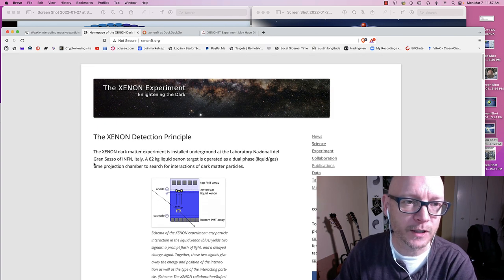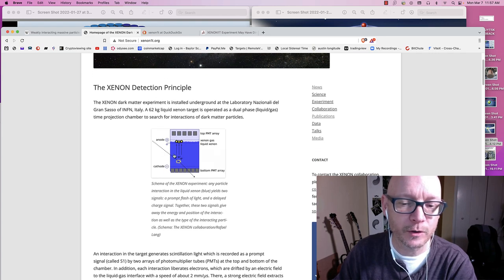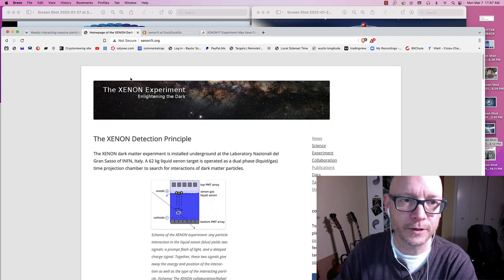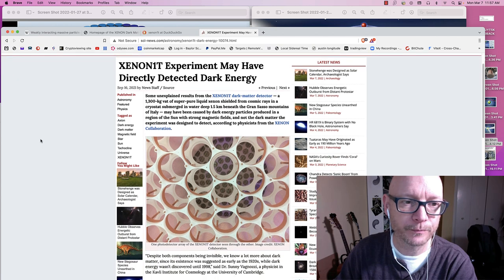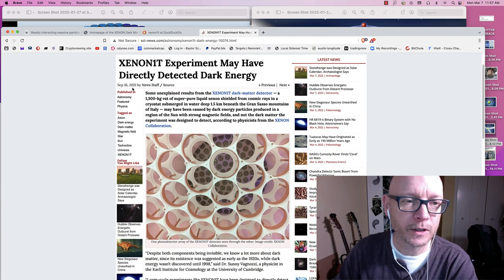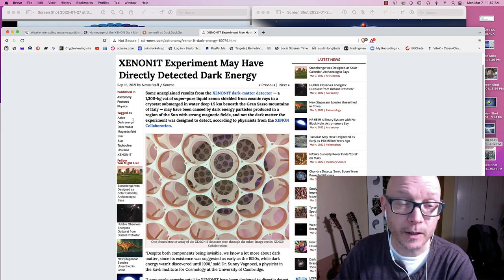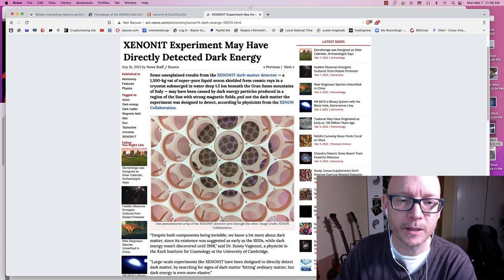Now, did they detect dark matter, or did they detect some other form of weakly interacting massive particle? That, I guess, is what we're still waiting. They said it could take a couple years for them to really try to understand what they detected. Here's their website, xenon1t.org. And again, they're kind of showing what I just described there, of just like a basic idea of how the experiment works.